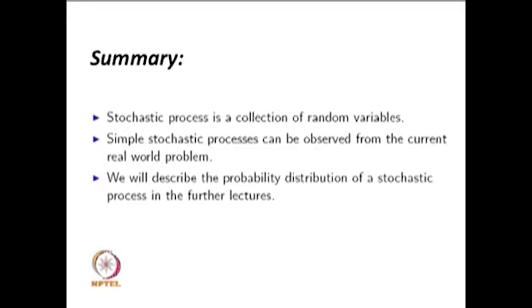In this lecture we have seen the meaning of a stochastic process and how to create one — it is a collection of random variables. We defined the stochastic process and discussed the parameter space and state space. We then gave the four classifications of stochastic processes based on these spaces, along with real-world examples illustrating each type.